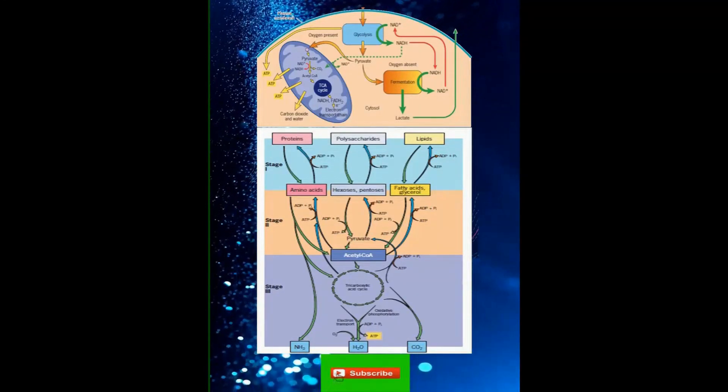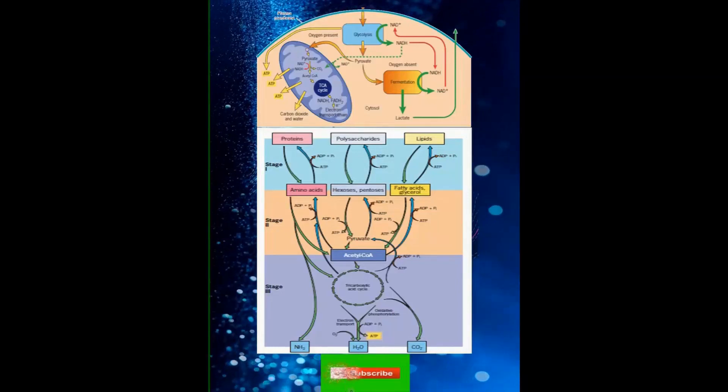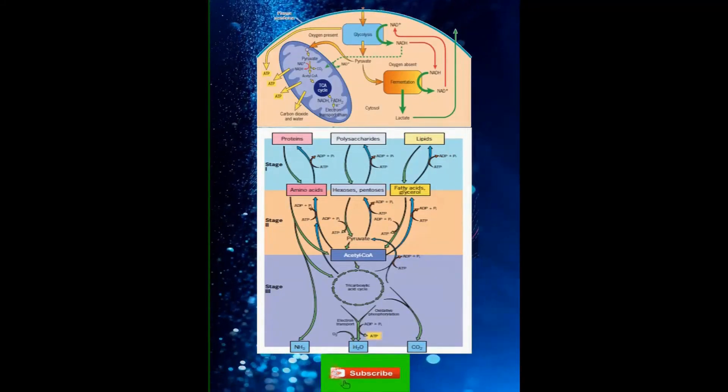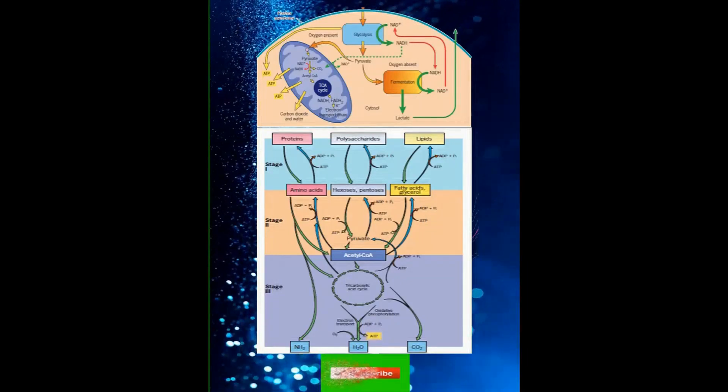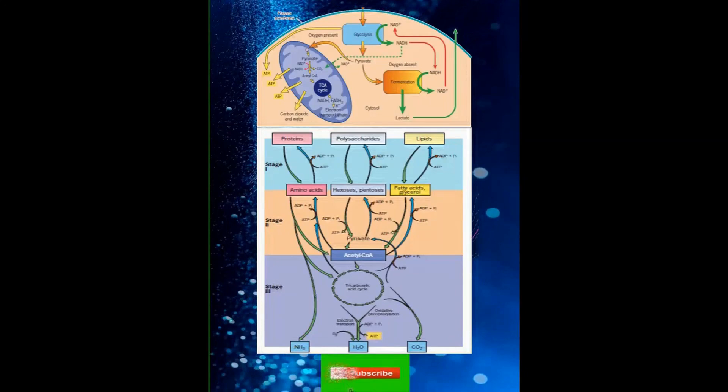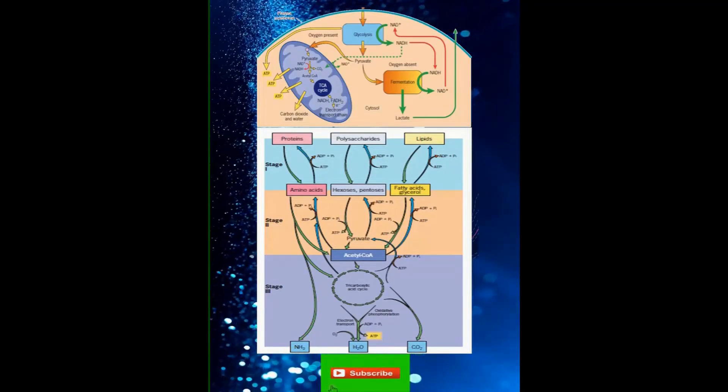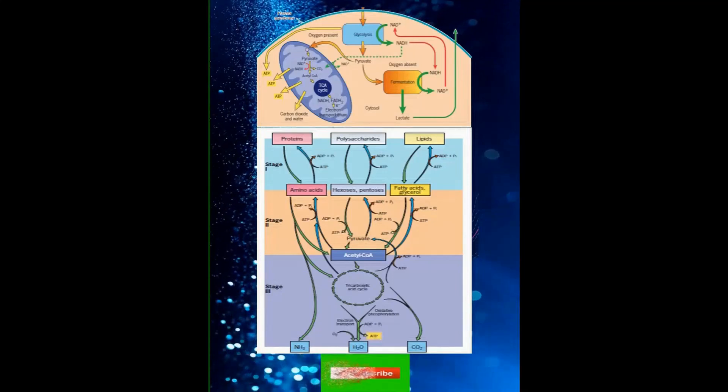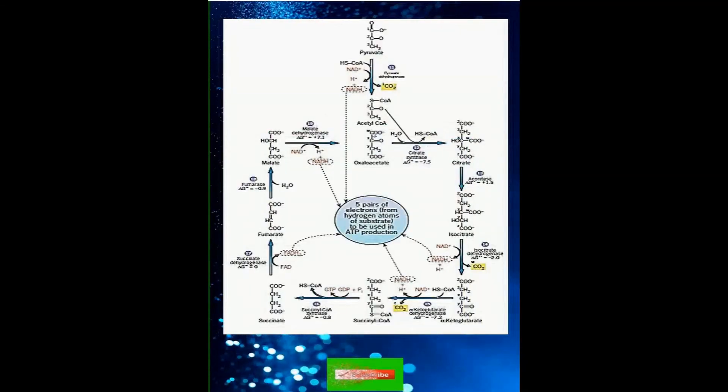Each pyruvate molecule produced by glycolysis is transported across the inner mitochondrial membrane and into the matrix where it is decarboxylated to form a 2-carbon acetyl group. The acetyl group is transferred to coenzyme A to produce acetyl CoA. Prior to entering Krebs cycle, pyruvic acid molecules are altered.